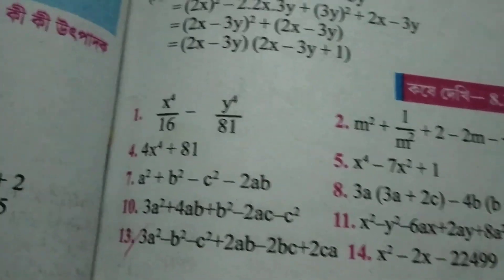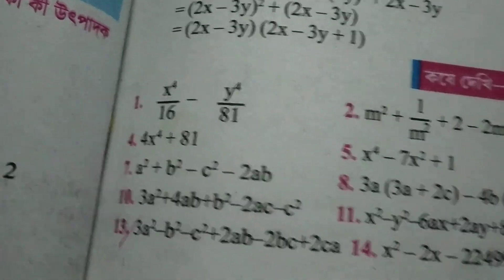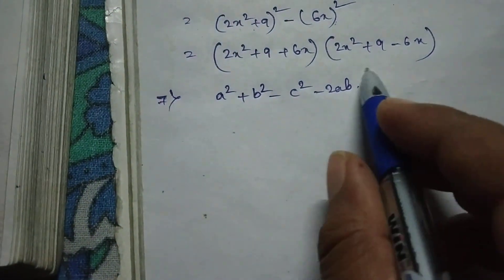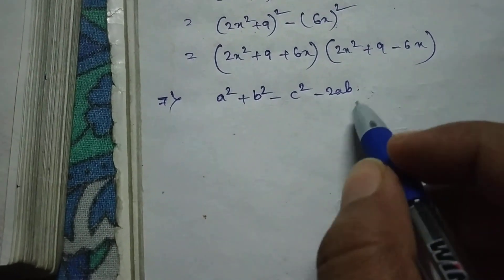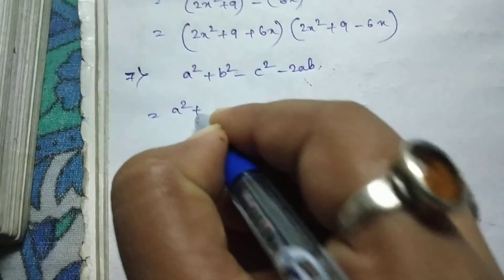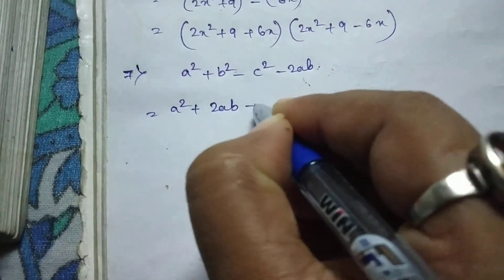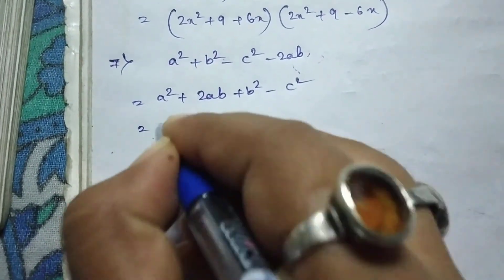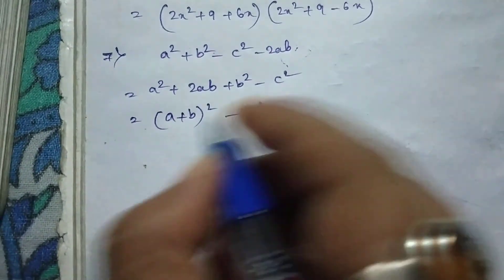Next is the short number. Short number: a square plus b square minus c square minus 2ab. This is the first question. Since ab equals the higher square, a square plus 2ab plus b square minus c square, and a plus b plus c plus a square minus c square.